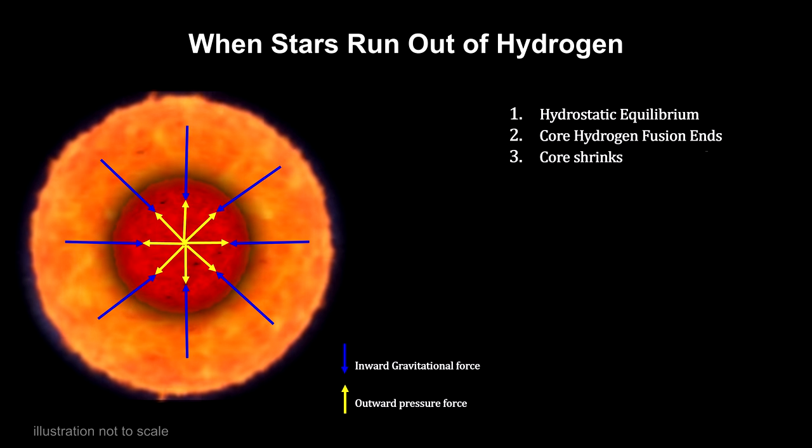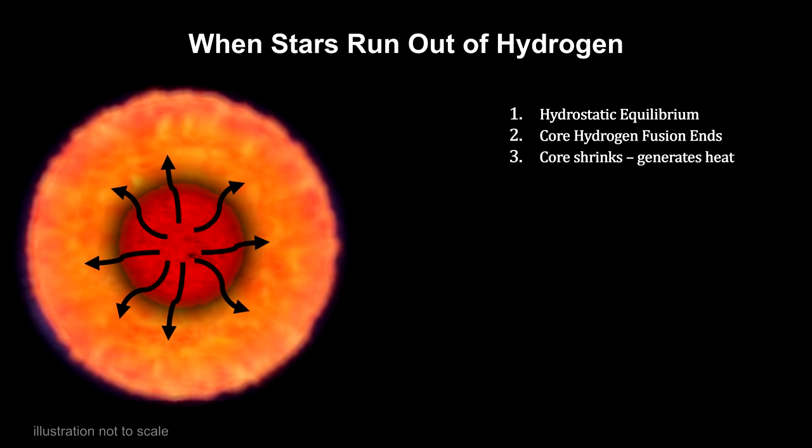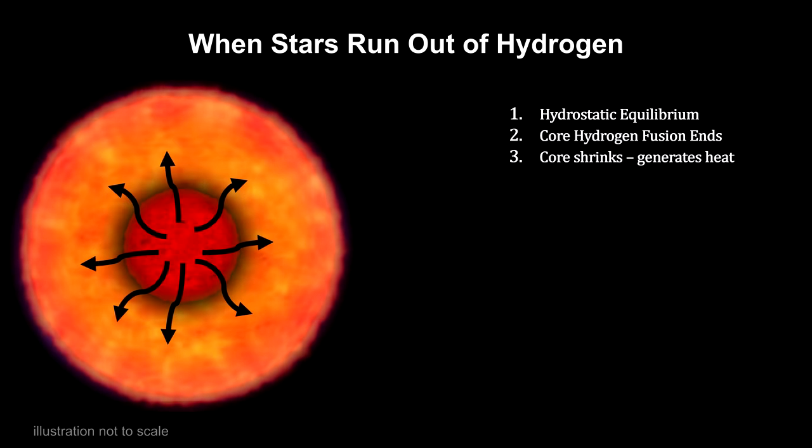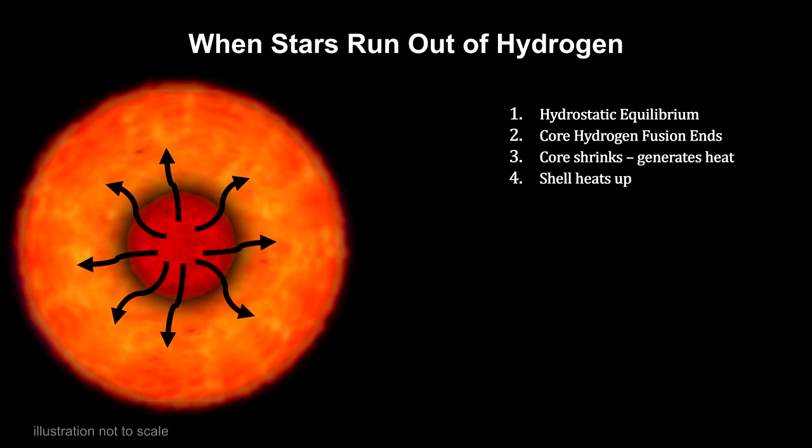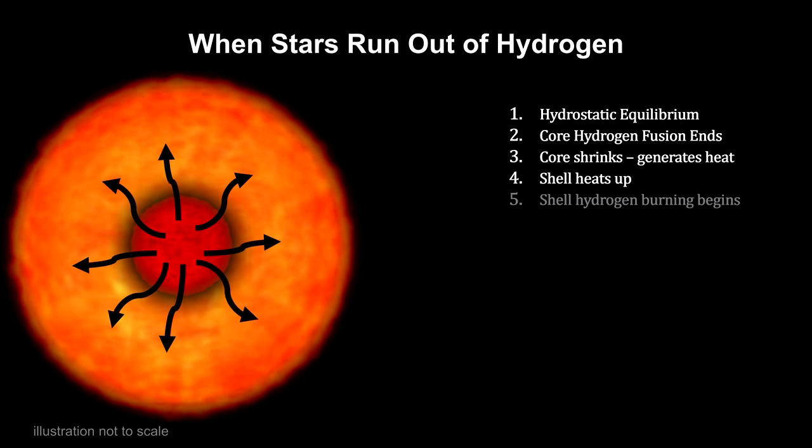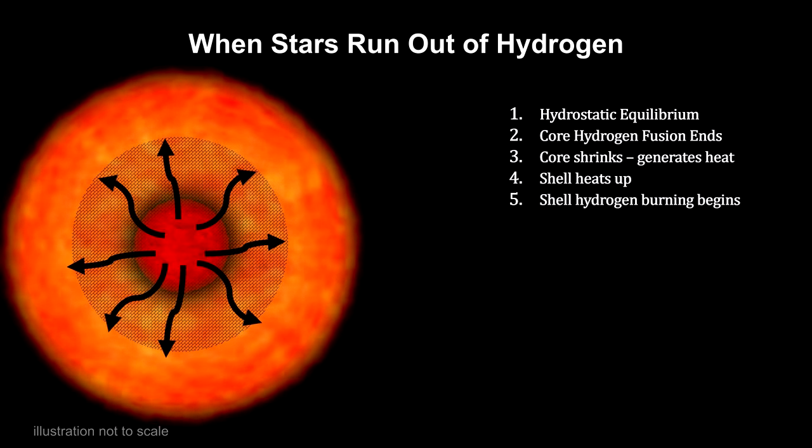As the star's core shrinks, the energy of the inward falling material is converted to heat. The heat flows outward to cooler regions. The added heat raises the temperature of the layer of hydrogen just outside the core. Once this shell becomes hot enough, hydrogen fusion begins there.